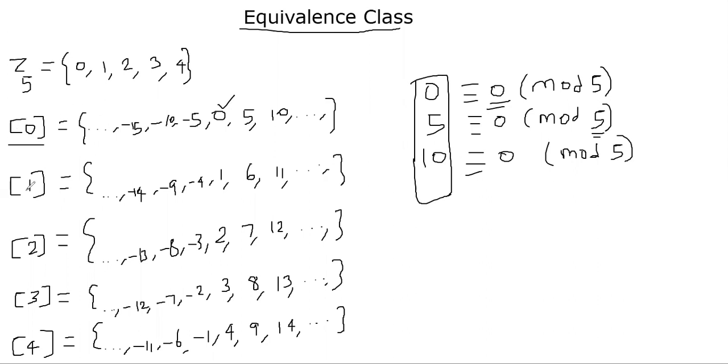Similarly, you can imagine that the congruence class [1] is made of the set of all elements that are congruent to 1 mod 5. For example, 1 is congruent to 1 mod 5, so it is here. If you add 5 to it, 6 is also congruent to 1 mod 5, and 11 is also congruent to 1 mod 5. So you get all of the numbers that are congruent to 1 mod 5.